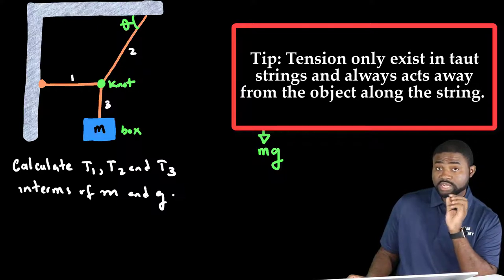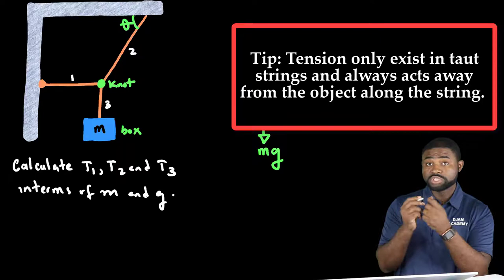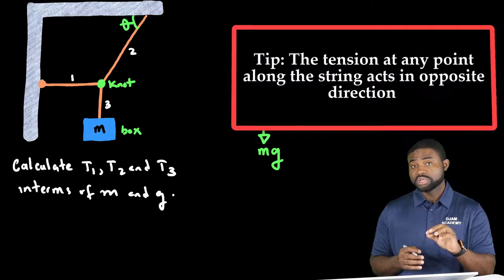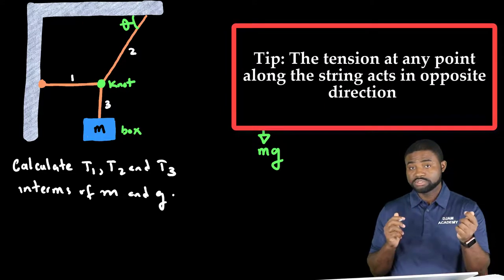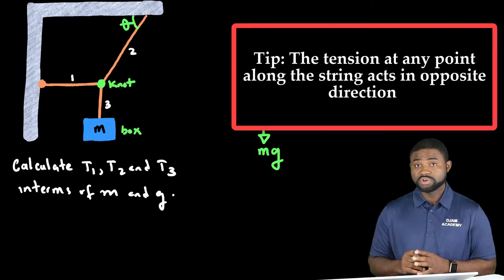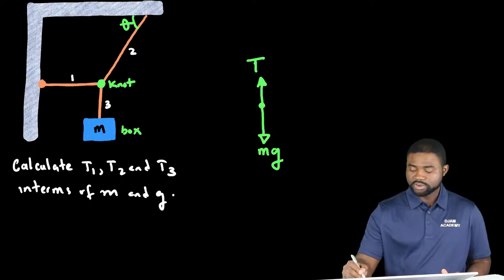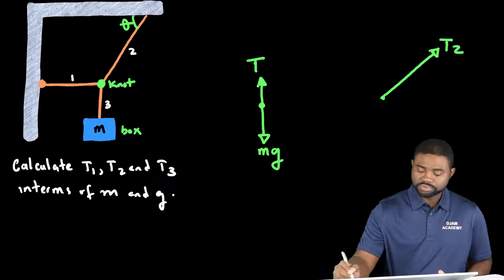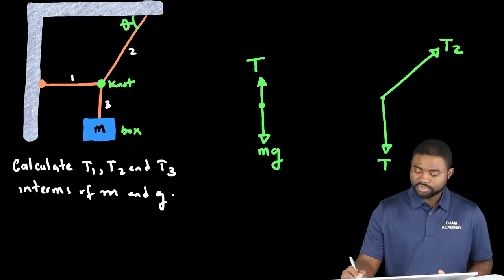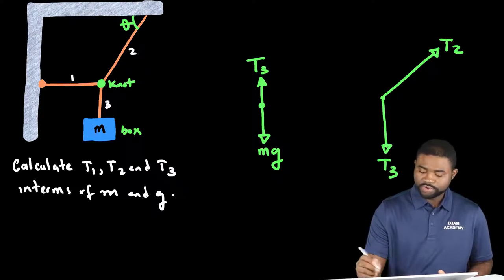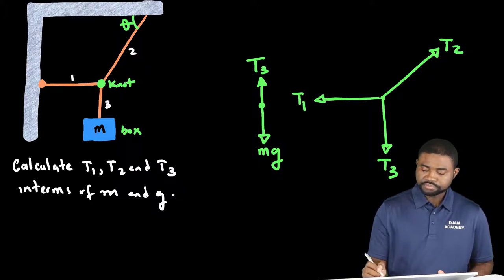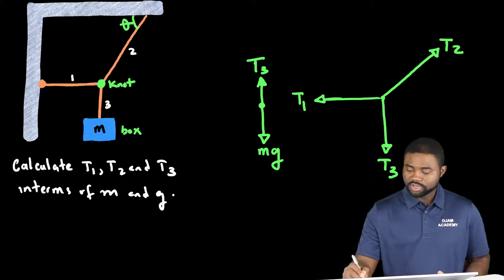Now the tension at any point on the string acts in opposite directions. This is really a consequence of Newton's law of motion. Now let's do the free body diagram for the knot. We will have three forces: this will be T2, this will be T3, and we will have here T1.